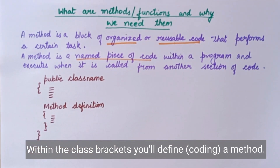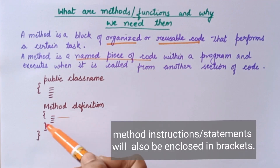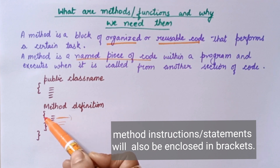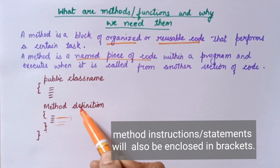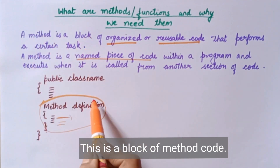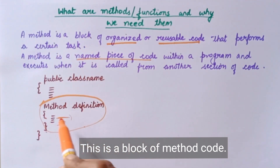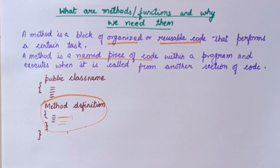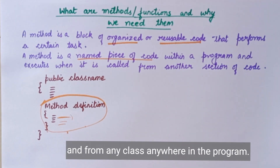You will have a definition — that means you will have coding. The method will have code with instructions, lines of statements. There will be an orientation in the background. This is a block — a method is a block, a block of code which will be organized. I can use this method every time, and whenever I have to call it, I can call this method from any class.